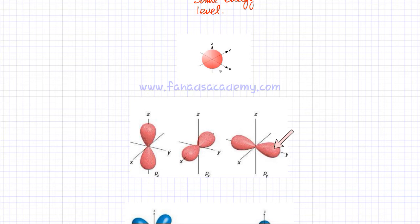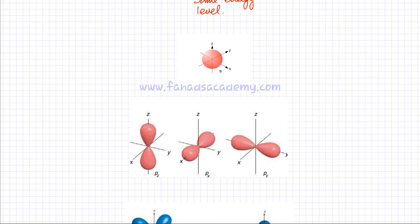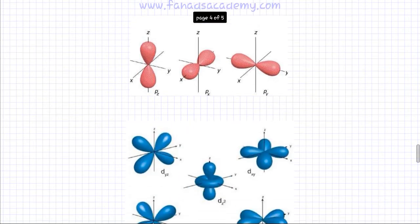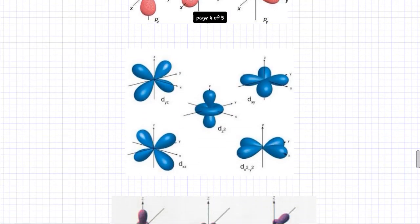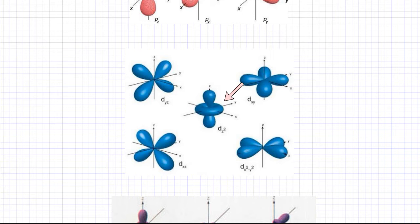P orbitals are double-lobed in shape. If an electron is in a P orbital, its electron density — the probability of finding the electron — would be in these two lobes. To an outside observer, the electron appears to be everywhere in this region because it travels very fast. Similarly, there are five different types of D orbitals, lying on different planes, with four lobes instead of two.